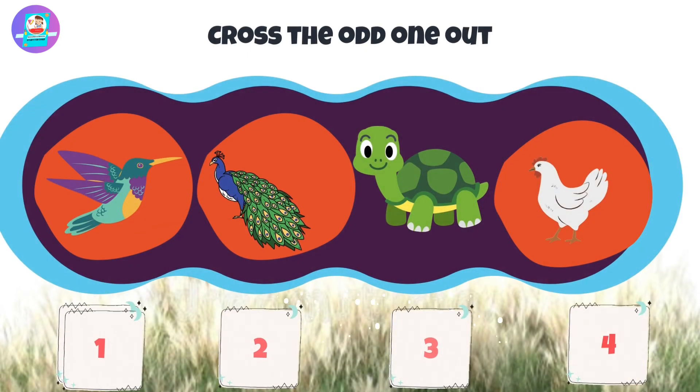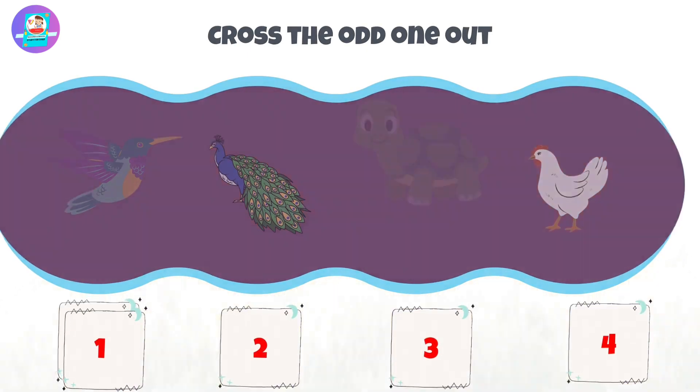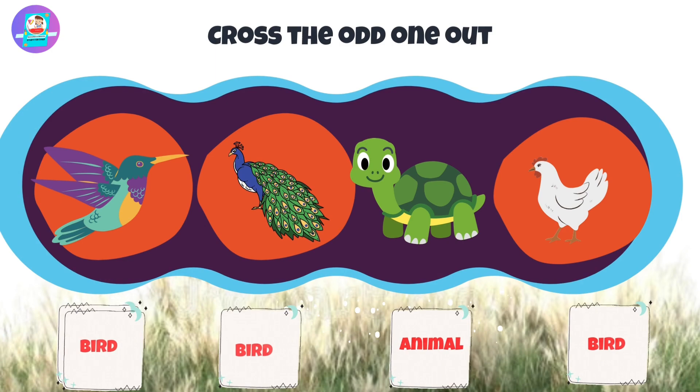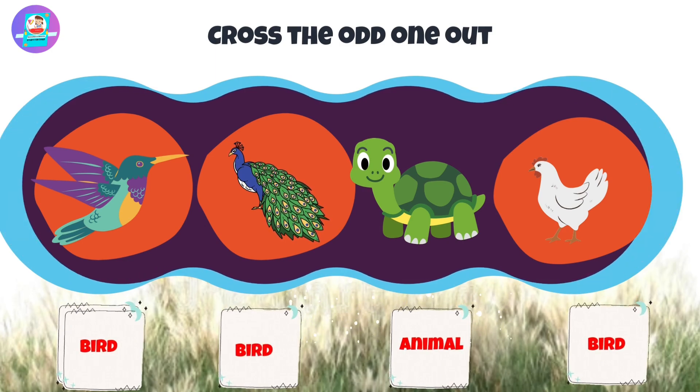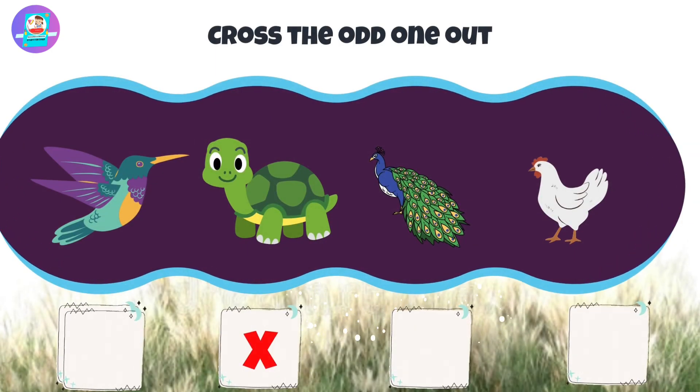Okay, let's check first. When we see here we have 3 birds and 1 turtle, which is the animal that is odd. So put a cross on this turtle.